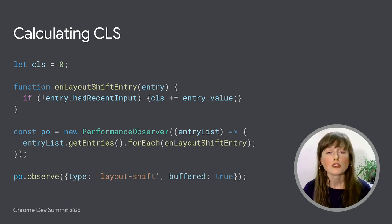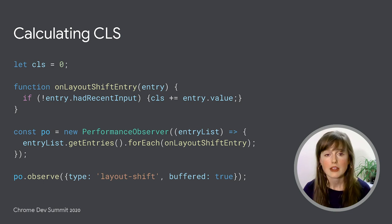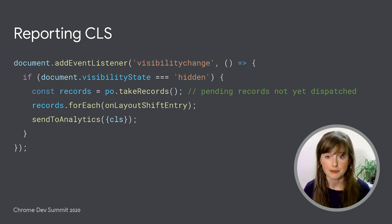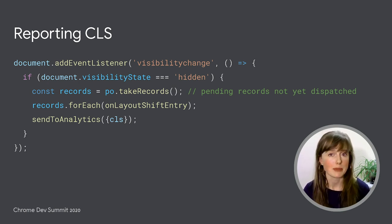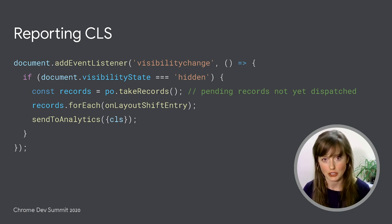You could also add code inside that callback function to report this intermediate value of CLS, although it's not necessary. Ultimately, the only value of CLS that matters is the final one. Final CLS is not determined by taking a bunch of CLS entries and seeing which one occurred last. Instead, it's determined by listening for the visibility state change event.